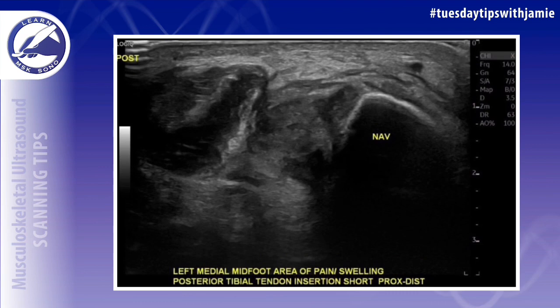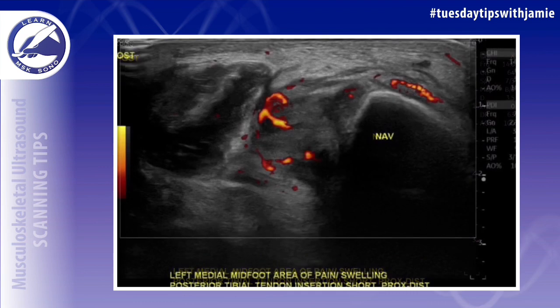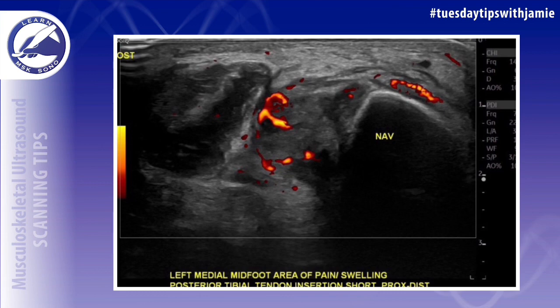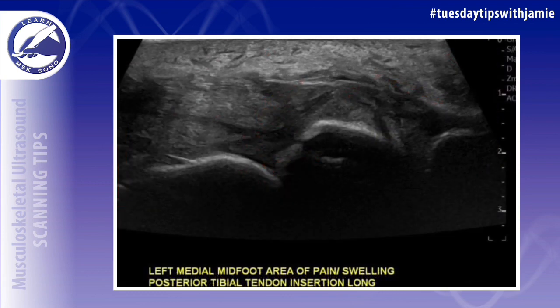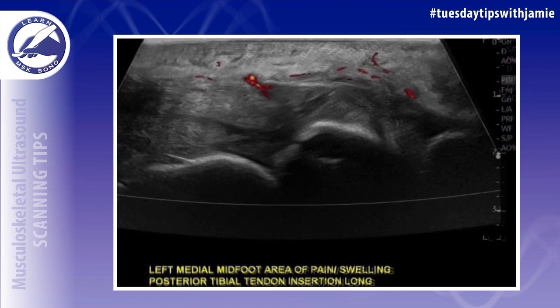When there's any posterior tibial tendon pathology present, such as tendinosis or tears, the spring ligament should also be evaluated for injury, because they're both important stabilizers of the arch of the foot.